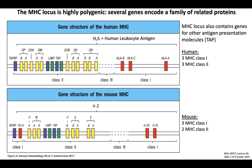Considering the MHC class 1 genes depicted by red bars, humans and mice both encode three separate MHC class 1 genes. In humans these are HLA-A, HLA-B, and HLA-C, while in mice these are H2-K, H2-D, and H2-L. The MHC class 2 region encodes both alpha and beta subunits, shown in yellow boxes. Humans have three MHC class 2 genes — HLA-DP, HLA-DQ, and HLA-DR — while mice have two: H2-A and H2-E.